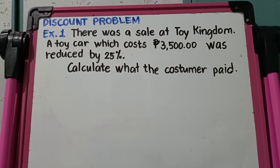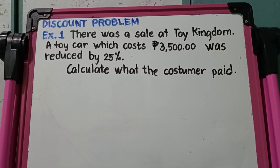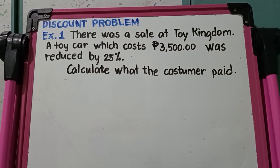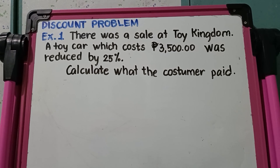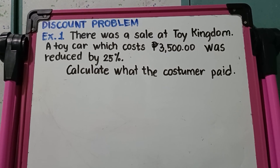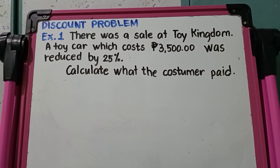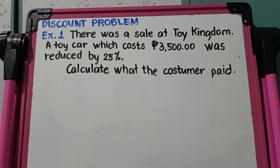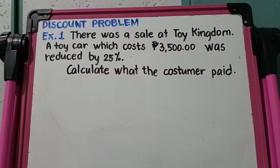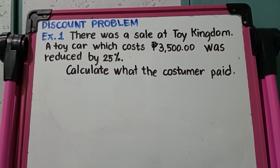There was a sale at Toy Kingdom. A toy car which cost 3,500 pesos was reduced by 25%. Calculate what the customer paid.